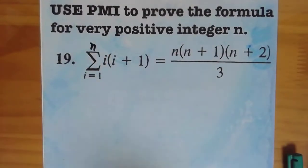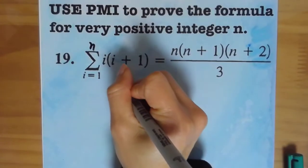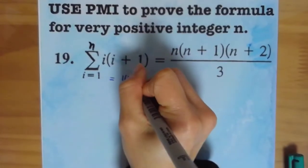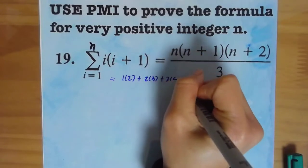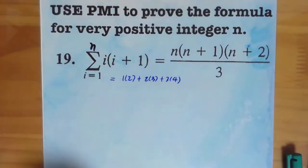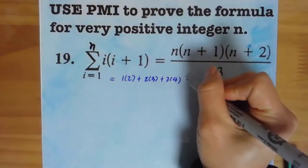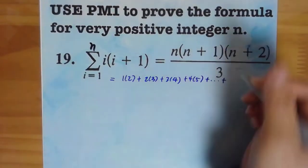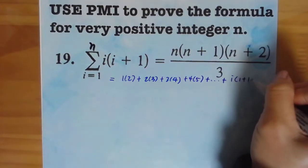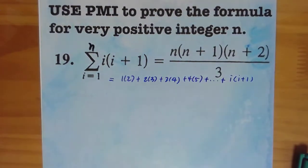I'm going to write it out for you. This series is just simply saying 1 times 2 plus 2 times 3 plus 3 times 4 because it's i times i plus 1, which means i times the next term. 4 times 5 plus dot dot dot plus i times i plus 1. That's what it's saying it's doing.